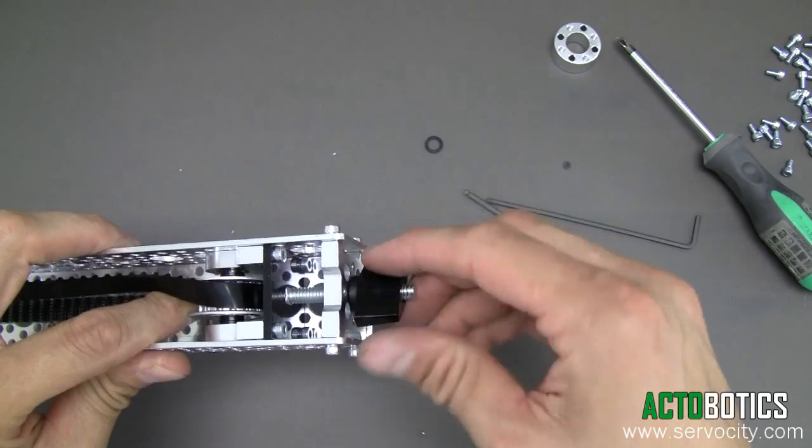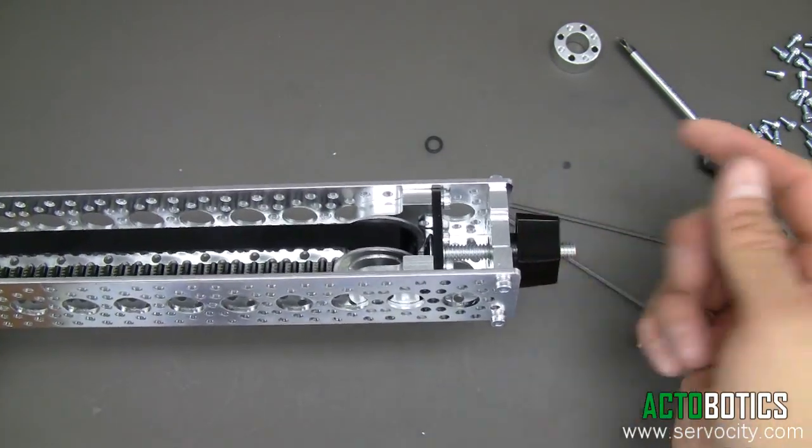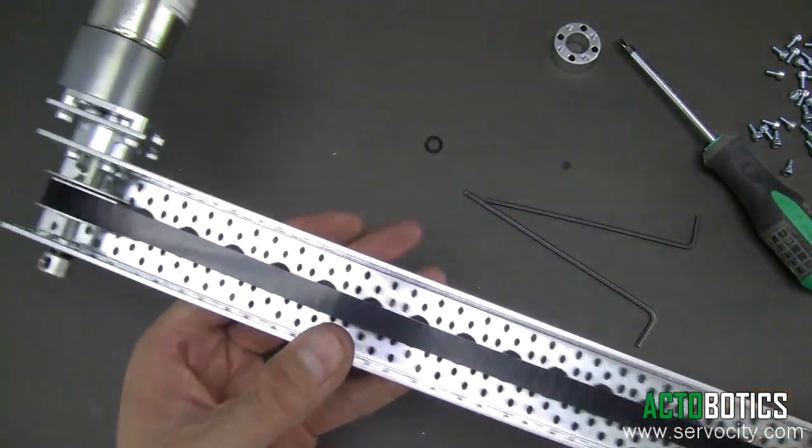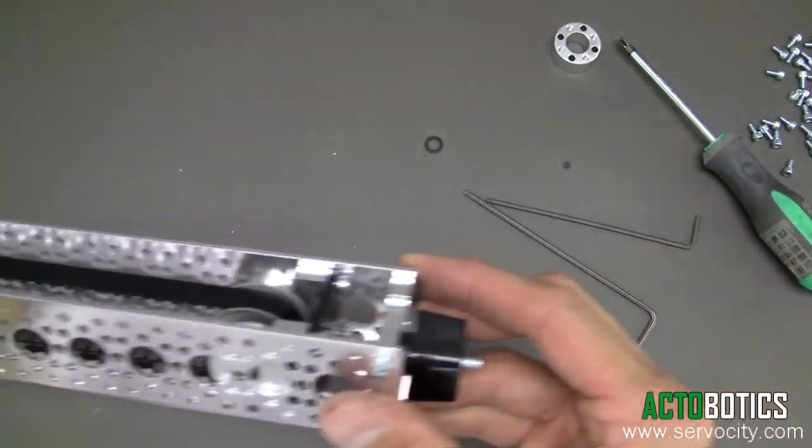Now we're going to twist on our finger screw all the way. As you can see there, it is now beginning to tighten up that belt. You don't really need that much tension, just enough to keep it in place.